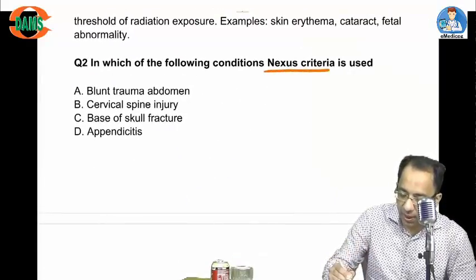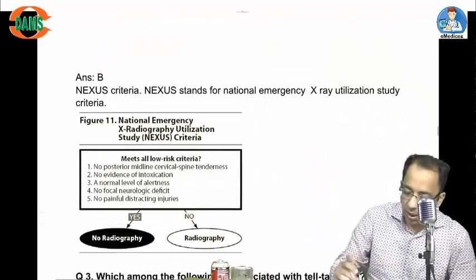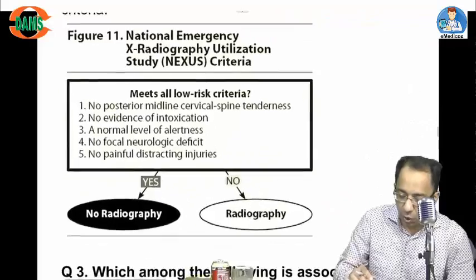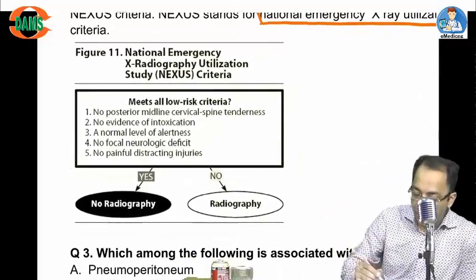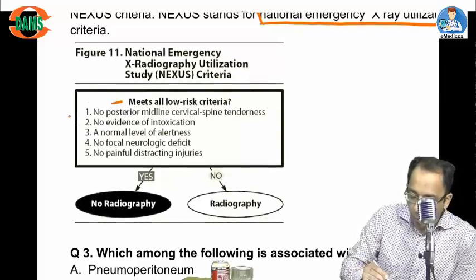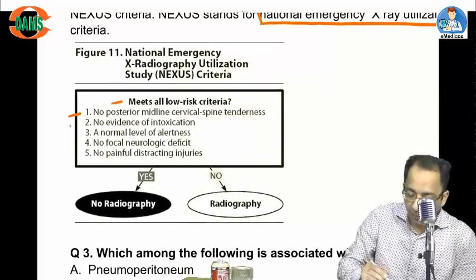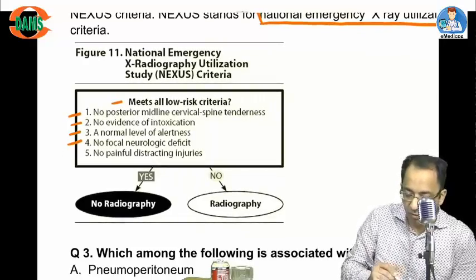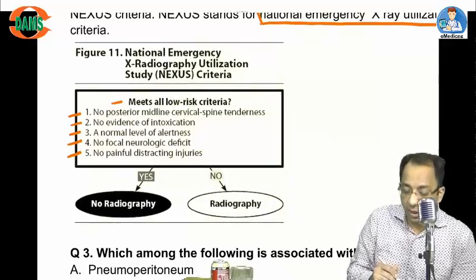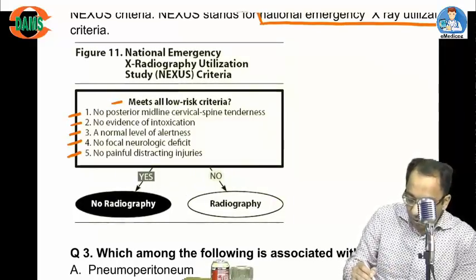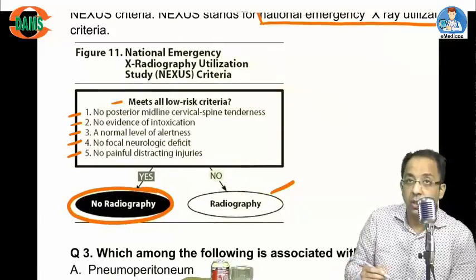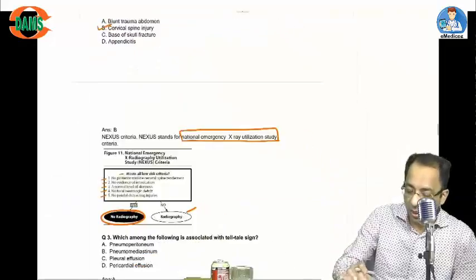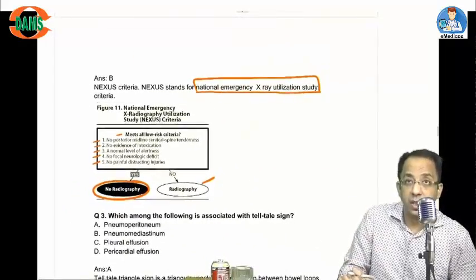In which conditions is NEXUS criteria used? NEXUS stands for National Emergency X-ray Utilization Study criteria, used to decide whether a cervical spine x-ray is needed in a trauma patient. The five low-risk criteria are: no posterior midline cervical spine tenderness, no evidence of intoxication, normal level of alertness, no focal neurological deficit, and no painful distraction injury. If all answers are 'no,' no x-ray is required; otherwise, x-ray is required.